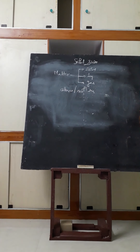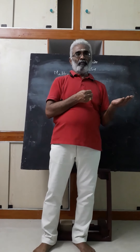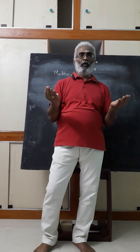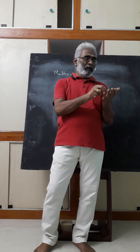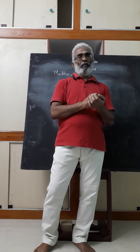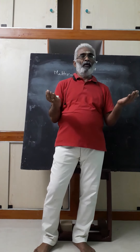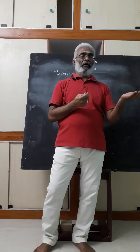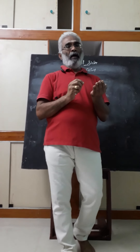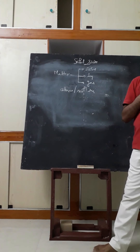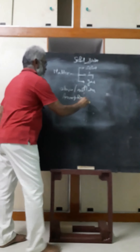Let us now move on to the classification of solids. Consider sugar in one hand and talcum powder in the other. If you compare, you can see the difference very clearly. The individual particles of sugar have a definite shape, but the particles in talcum powder do not. Sugar, which has definite shape, is called a crystalline solid, and particles which do not possess definite shape are called amorphous solids. So we have two types of solids: amorphous and crystalline.